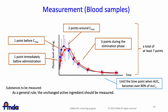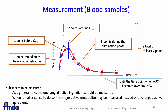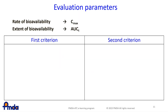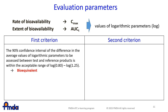Generally, the unchanged active ingredient should be measured. Major active metabolites may be measured instead of the unchanged active ingredient when it makes sense to do so. AUCT and Cmax are generally used as parameters for bioequivalence determination. AUCT and Cmax are usually log-normally distributed, so these parameters are logarithmically transformed before the statistical analysis. If the 90% confidence interval of the differences in average values of logarithmic AUCT and Cmax between the test and reference products is within the acceptable range of log 0.8 to log 1.25, the test product is considered to be bioequivalent to the reference product.